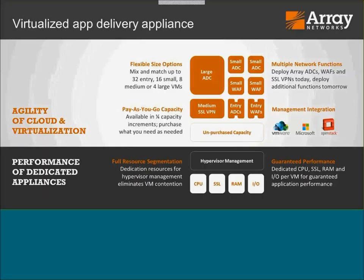Here's why we're not sacrificing on performance and why we're able to guarantee performance. First, we've held back resources on the platform for hypervisor management so we can eliminate VM contention. Second, for each virtual machine running on KVM, we've dedicated CPU resources, dedicated SSL resources, dedicated memory, and dedicated interfaces. We use techniques like SR-IOV and other techniques to ensure that each virtual machine on the platform gets dedicated resources and dedicated performance. So when we say a small ADC can maintain a certain level of performance, that's guaranteed and will never change — meaning you can support business-critical applications and customers with SLAs and other requirements.